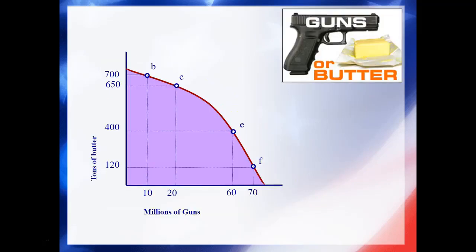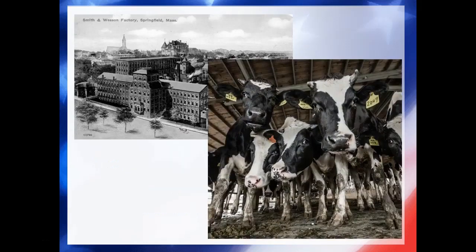In economics, the classic example that every economics student studies is the concept of guns and butter. The vertical line represents the possible production of butter in the United States, and the horizontal line is the amount of guns. The question is: how much guns and how much butter? We need to allocate resources and direct the factors of production in a certain direction. The Smith & Wesson factory cannot produce butter, and dairy farms aren't really useful in the manufacturing of .357s. So we need to answer the question: what will be produced?